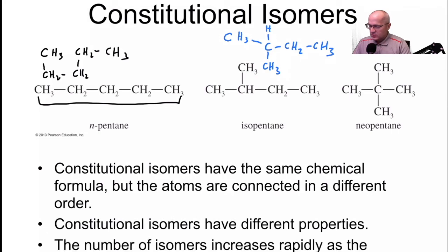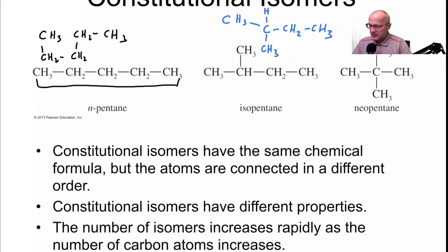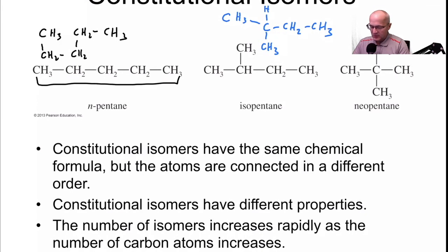So constitutional isomers have different properties. That's because they're different molecules. So these three molecules here are all different. They all have different melting points, different boiling points. Every physical property should be or has the potential to be different because they're different. They're not the same. That's probably, if you think about it, one of the reasons why nature has chosen carbon to build life upon. Because carbon can be used to make the same molecular formula. The same five carbons and 12 hydrogens, as you can see, can make three very different molecules with very different properties.